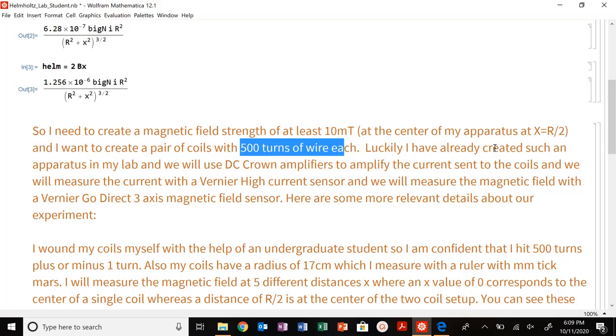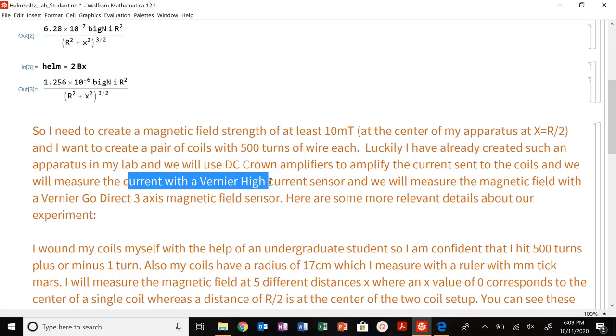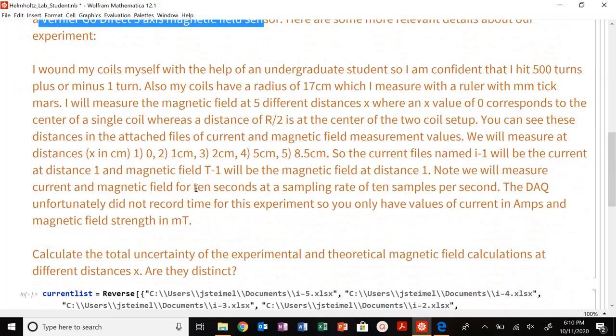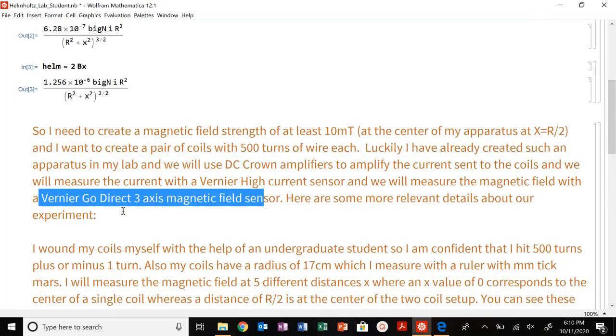Luckily, created an apparatus in my lab. We're going to use DC crown amplifiers to amplify the current sent to the coils. We're going to measure the current with a Vernier high current sensor. And we're going to measure the magnetic field strength with a Vernier go direct three axis magnetic field sensor.